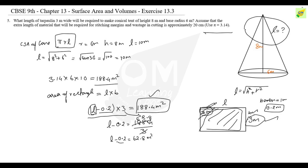So L minus 0.2 equals 188.4 divided by 3, which is 62.8 meters squared. The m² cancels out, so L minus 0.2 equals 62.8. Therefore L equals 62.8 plus 0.2, which gives us the value of 63 meters. So the required length of tarpaulin is 63 meters.